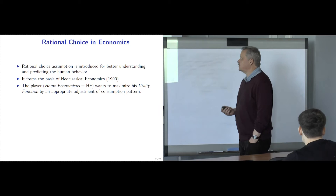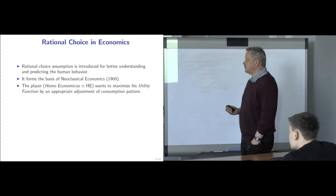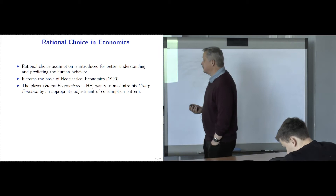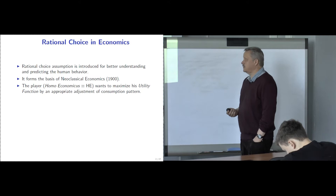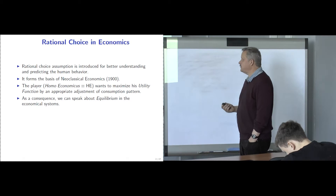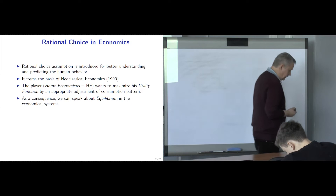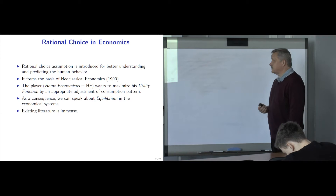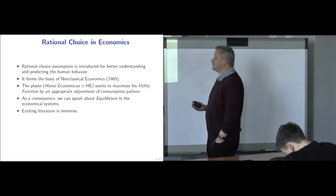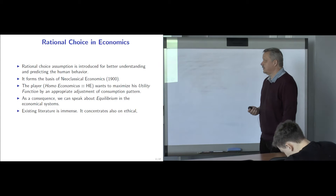Homo economicus is a person who wants to maximize his utility function by choosing an appropriate consumption pattern. Using this description of behavior, we are able to predict the result of his actions and to speak about the equilibrium in the economic system. This concept is quite old — more than 100 years old — and up to now, not all economists agree about it. They still continue to discuss whether it is reasonable to assume that people are rational or not.